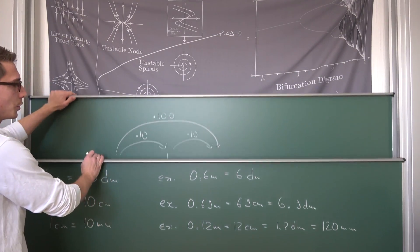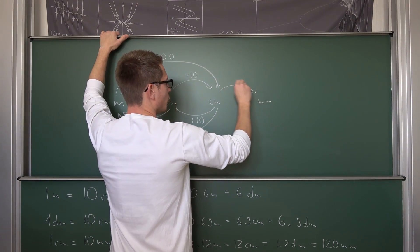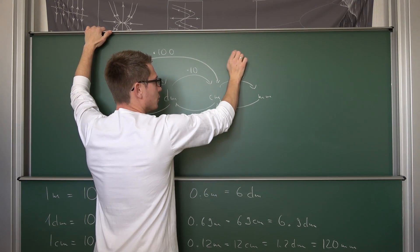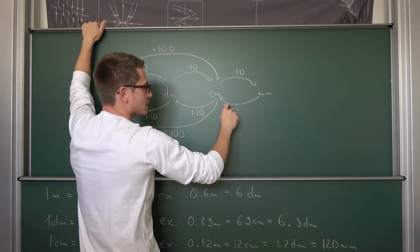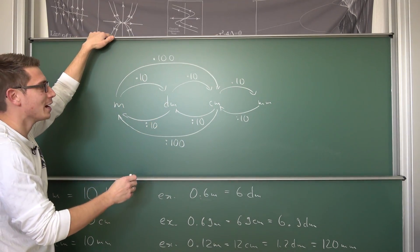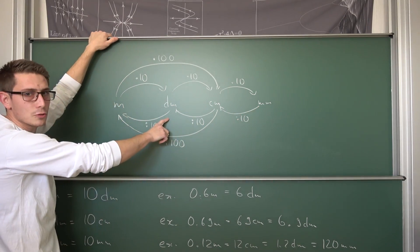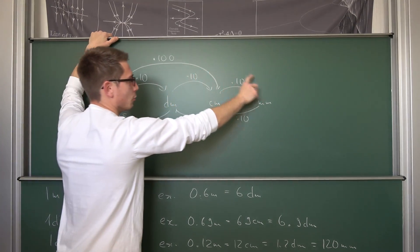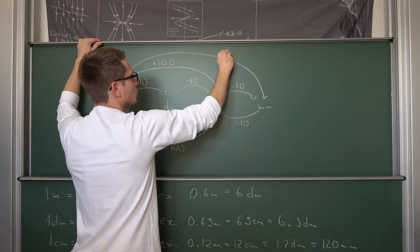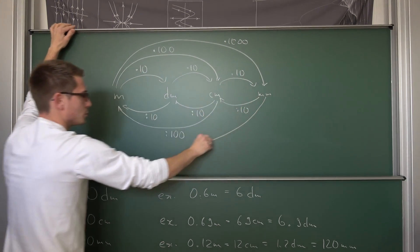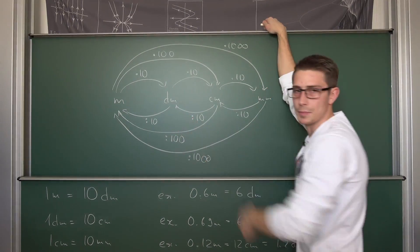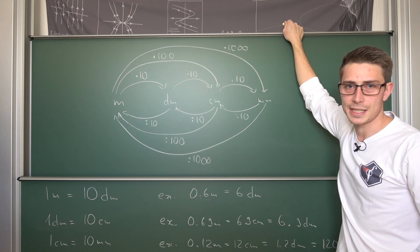Here are the conversion factors: to go from centimeters to millimeters, multiply by 10. To go from millimeters to centimeters, divide by 10. To go from millimeters to decimeters, divide by 100. To go from decimeters to millimeters, multiply by 100. To go from meters to millimeters, multiply by 1,000. To go from millimeters to meters, divide by 1,000. These are all just factors of 10, which makes the metric system straightforward.